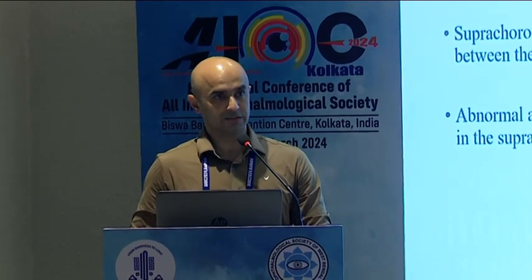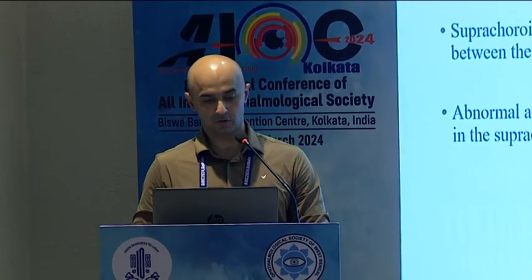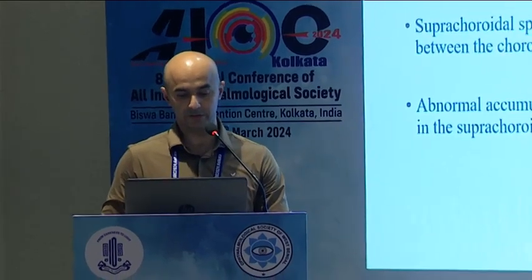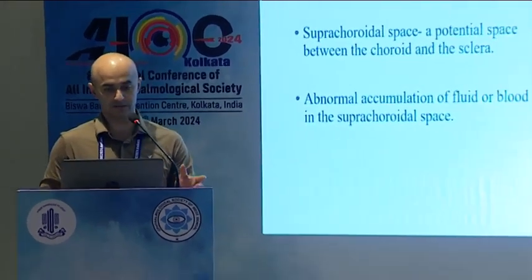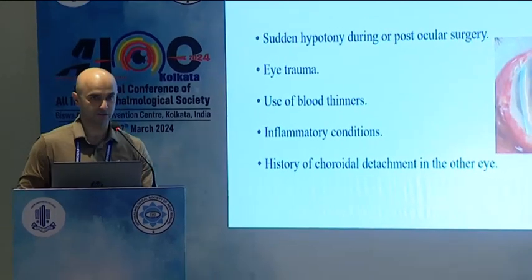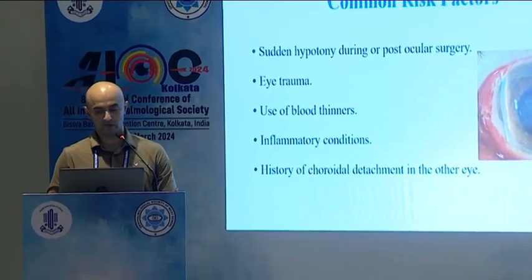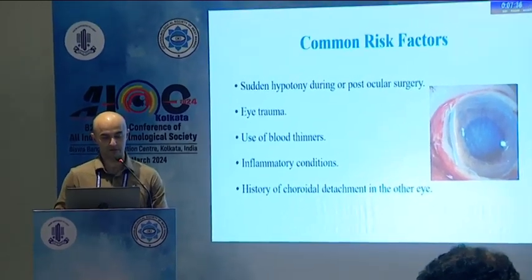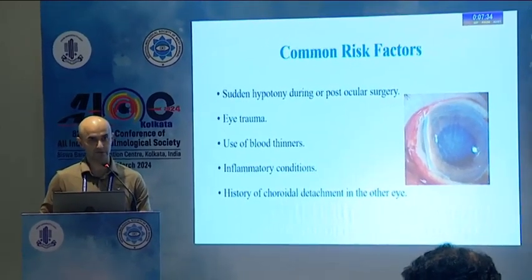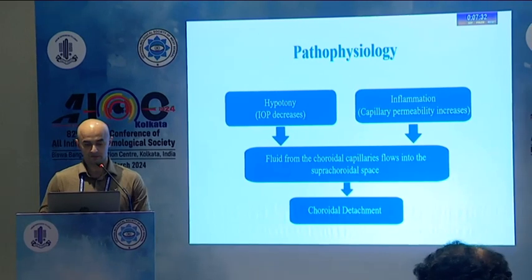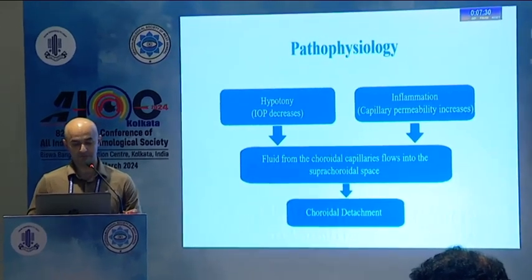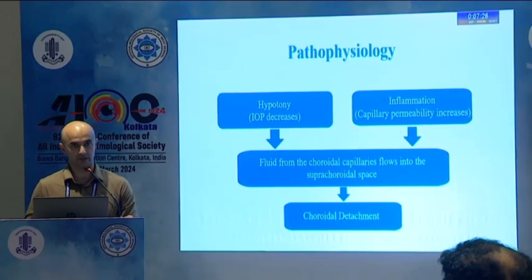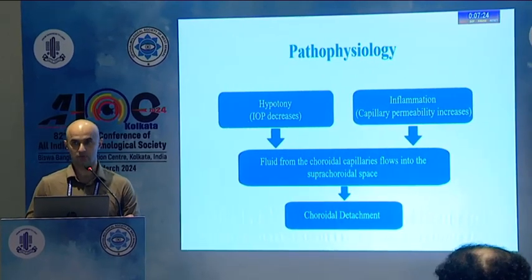So basically, it's a potential space — the supra-choroidal space between the choroid and sclera — and abnormal accumulation of fluid in the supra-choroidal space is choroidal detachment. It can be hemorrhagic or serous. The common risk factors are hypotony, trauma, use of blood thinners, inflammatory conditions, and history of detachment in the other eye. Hypotony leads to seepage of fluid from the choroidal capillaries into the supra-choroidal space, causing choroidal detachment.